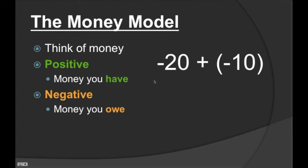How about negative 20 plus negative 10? Negative 20 — we actually owe that because it's negative. And negative 10 — we also owe that. It's like the example we had with seven red chips and four red chips — same exact concept. If we owe 20 and we owe 10 more, we put them together because we owe both of them. That gives us negative 30.